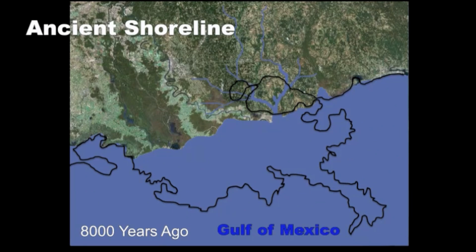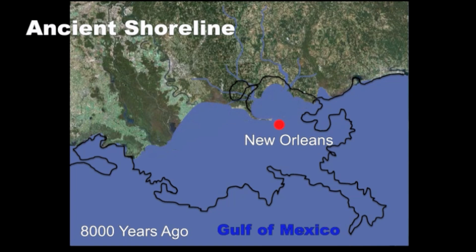Where New Orleans is located today was also under the sea. Sea level continued rising, forming a bay that would ultimately become Lake Pontchartrain.